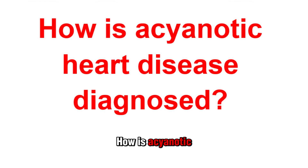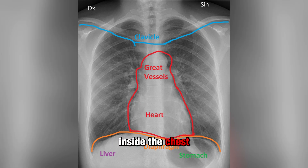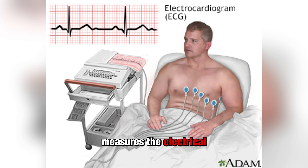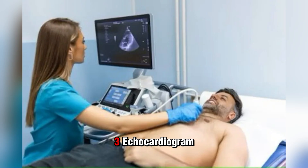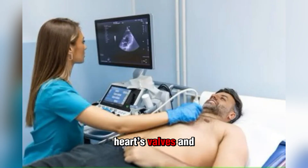How is acyanotic heart disease diagnosed? 1. Chest X-ray: A chest x-ray takes pictures inside the chest to reveal any structural abnormalities. 2. Electrocardiogram (ECG): measures the electrical activity of the heart. 3. Echocardiogram: uses ultrasound to create images of the heart's valves and chambers.